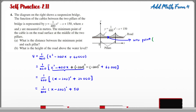From the vertex form, the coordinate x is 200 and the coordinate y is 50. Therefore, for part A, the distance between the minimum point and each pillar is 200 meters, and for part B, the height of the road above the water level is 50 meters.